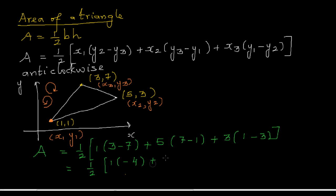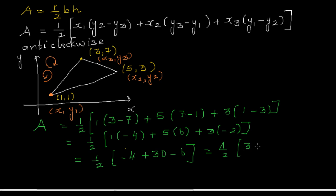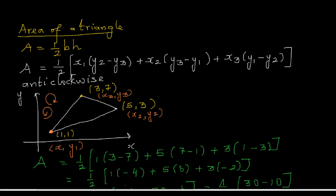Let's simplify: this is half times — 1 times negative 4, plus 5 times 6, plus 3 times negative 2. So this is half times (negative 4 plus 30 minus 6), which is half times (30 minus 10), which is half times 20, which equals 10.